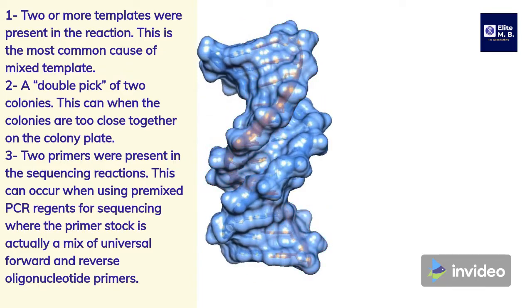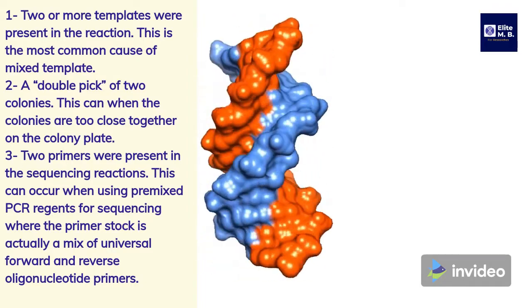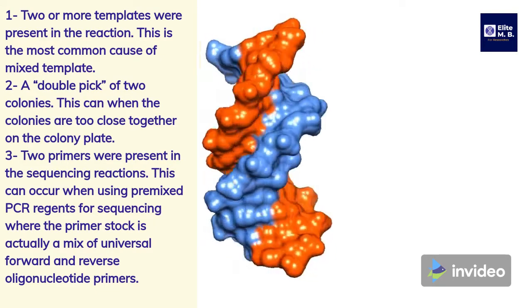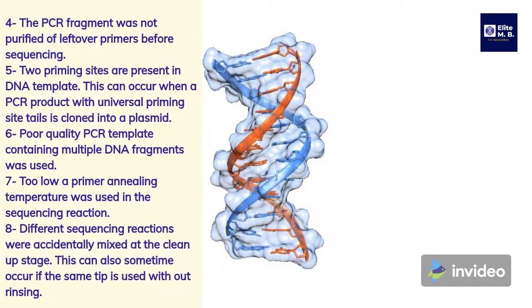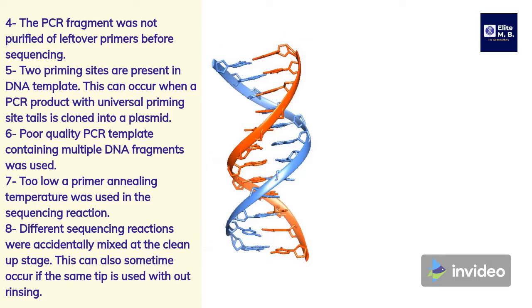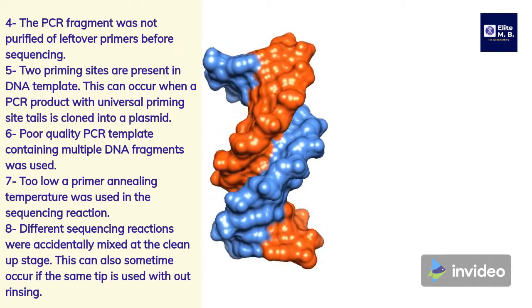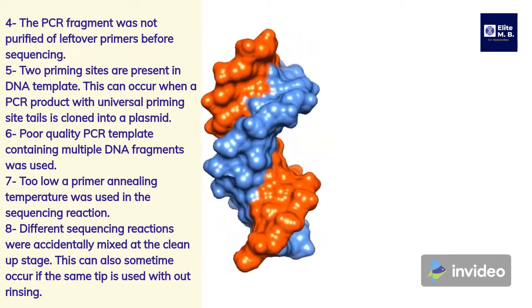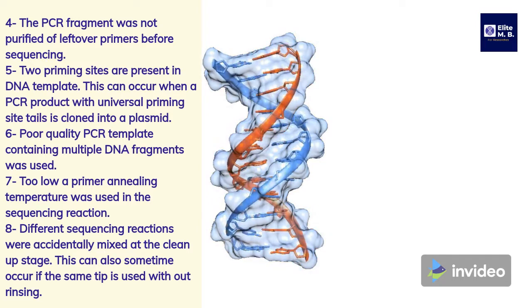Two primers were present in the sequencing reactions. This can occur when using premixed PCR regions for sequencing where the primer stock is actually a mix of universal forward and reverse oligonucleotide primers. The PCR fragment was not purified of leftover primers before sequencing. Two priming sites are present in the DNA template — this can occur when a PCR product with universal priming site tails is cloned into a plasmid.